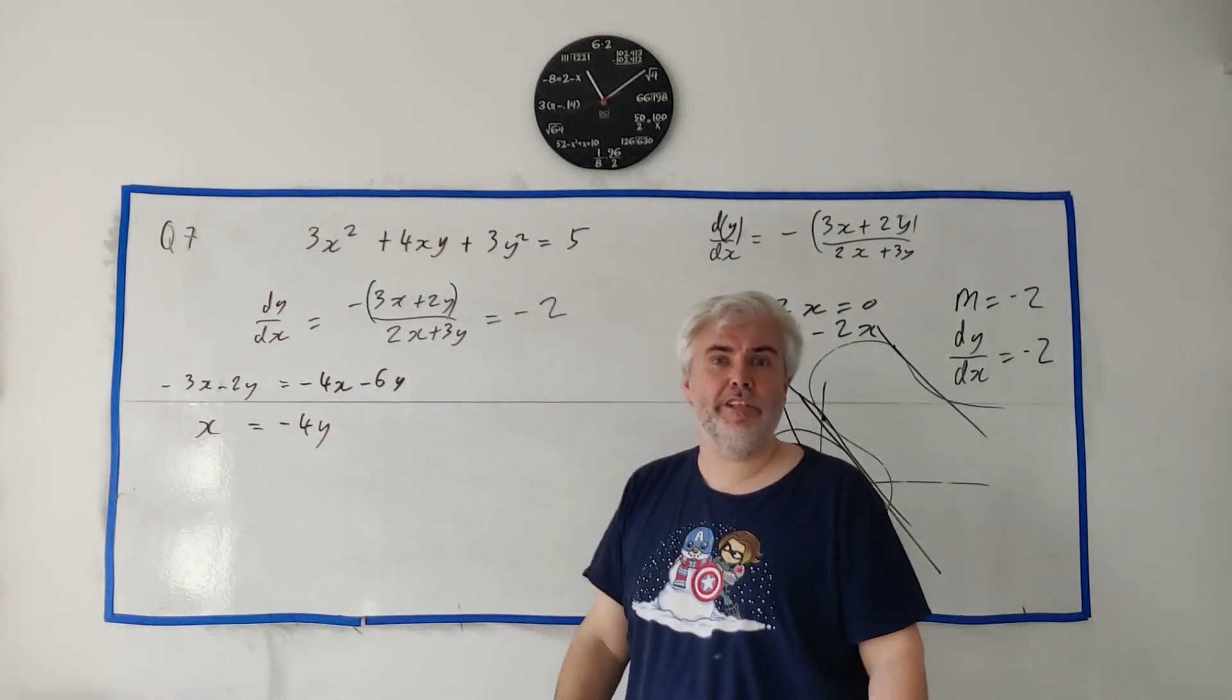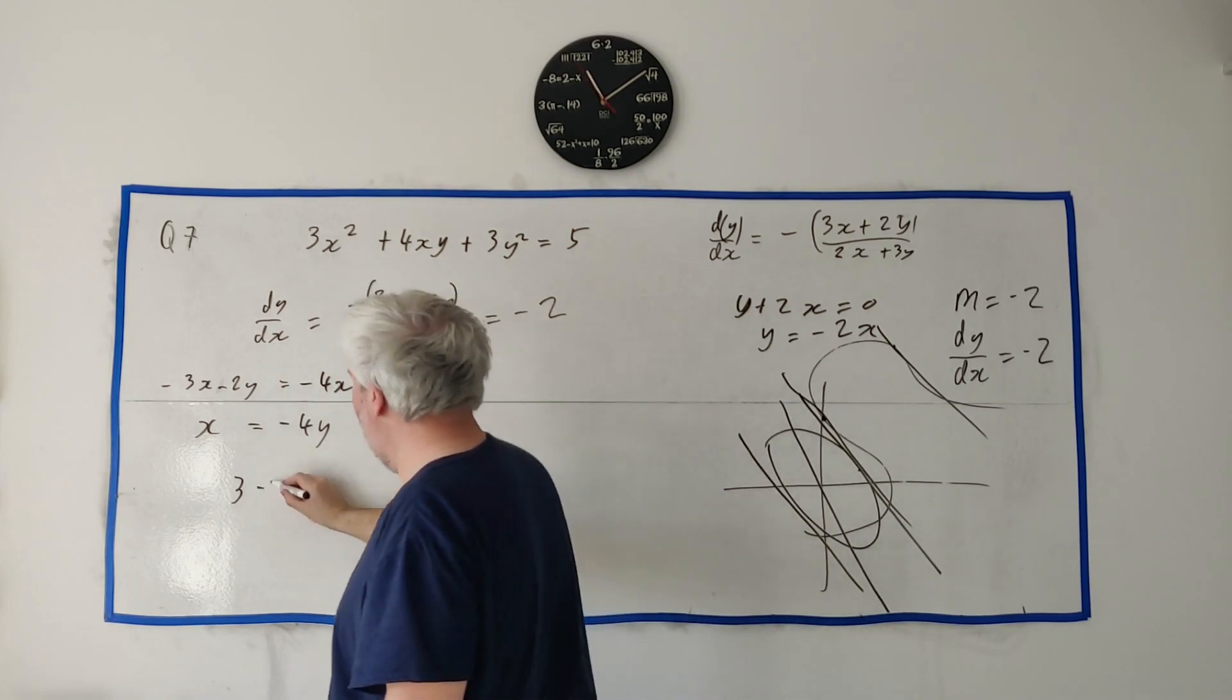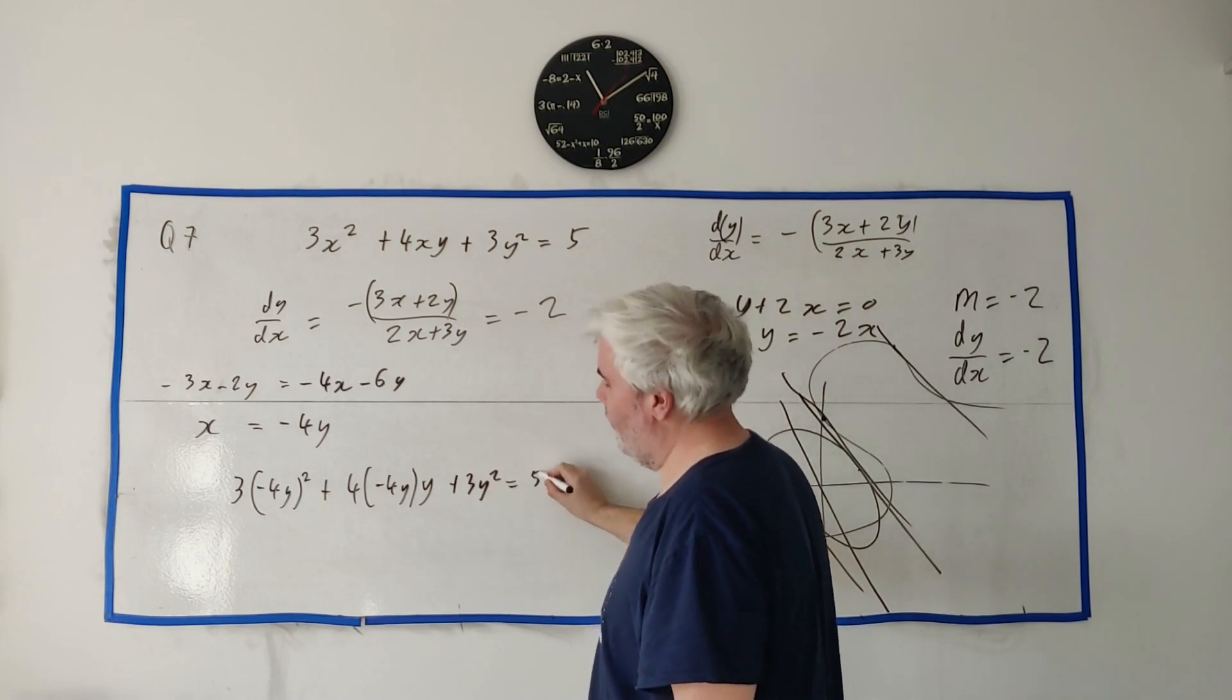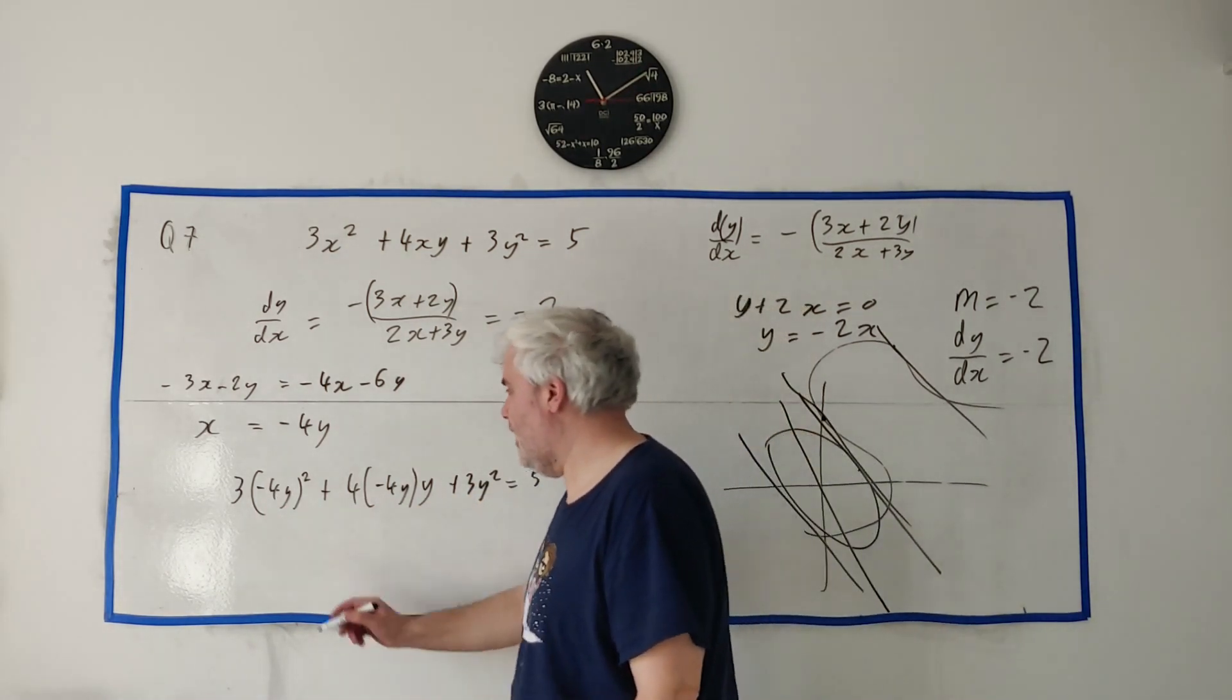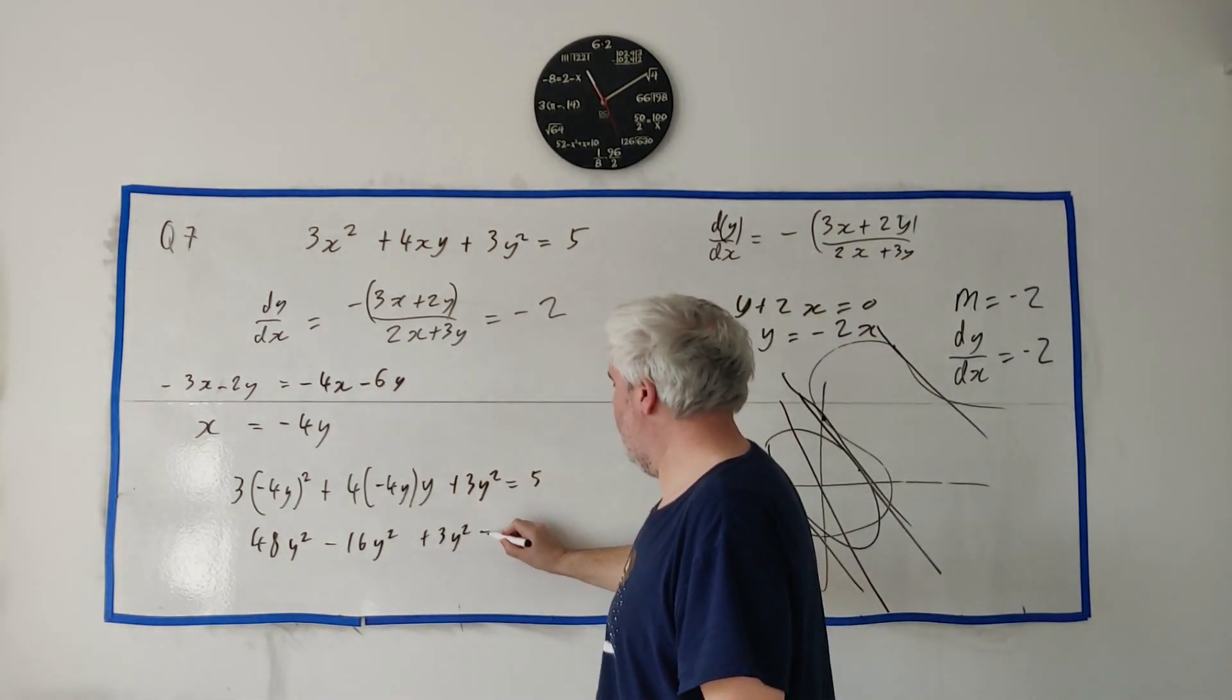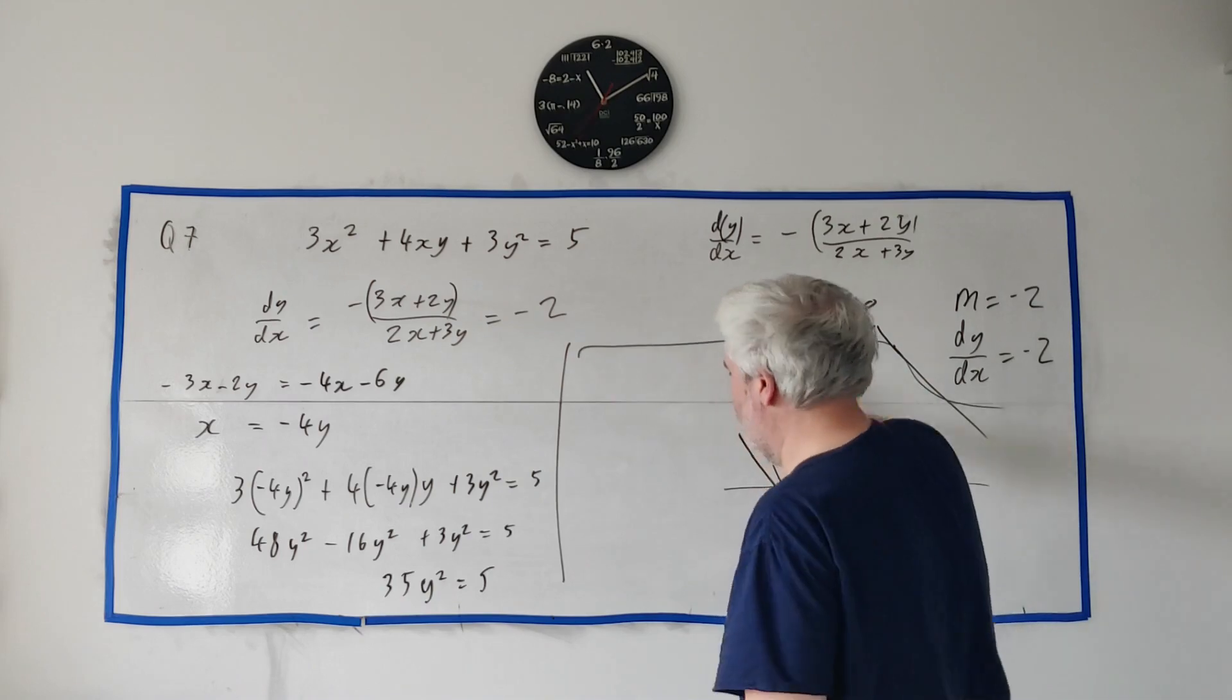x equals, that's how we solve most simultaneous equations. Find x equals, find y equals, and put it into the other one. So here's this equation. Let's just put this in. 3, instead of x, we got minus 4y, times y plus 3y squared equals 5. Let's clean all this up. We get 16y squared, 3 times 16 is 48y squared minus 16y squared minus 2y's there, plus 3y squared equals 5. And what have we got here? We got 32 plus 3 is 35y squared equals 5.